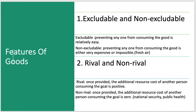An excludable good means preventing anyone from consuming the good is relatively easy — like milk. You've got to buy milk; if you don't buy milk, you can't use it. Non-excludable means preventing anyone from consuming the good is either very expensive or impossible — like air. If Chicago could tax air, they would probably do it, but they can't, because it's really hard.